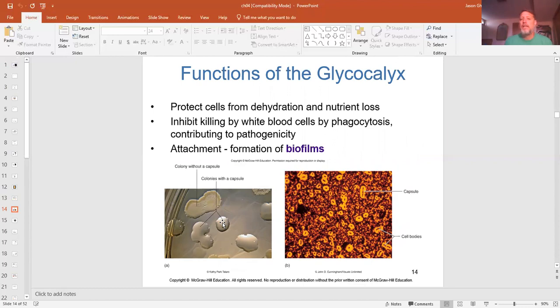These glycocalyx inhibit dehydration, nutrient loss, inhibit the phagocytosis of white blood cells, which in turn makes them more pathogenic or they're more likely to cause a disease. And they work in forming biofilms. It helps bacteria stick together so they can form a layer. And then they can kind of function together in that layer instead of just as an individual. They'll work together. You can still separate them out to be individual bacteria, but they work more as a community in that aspect.